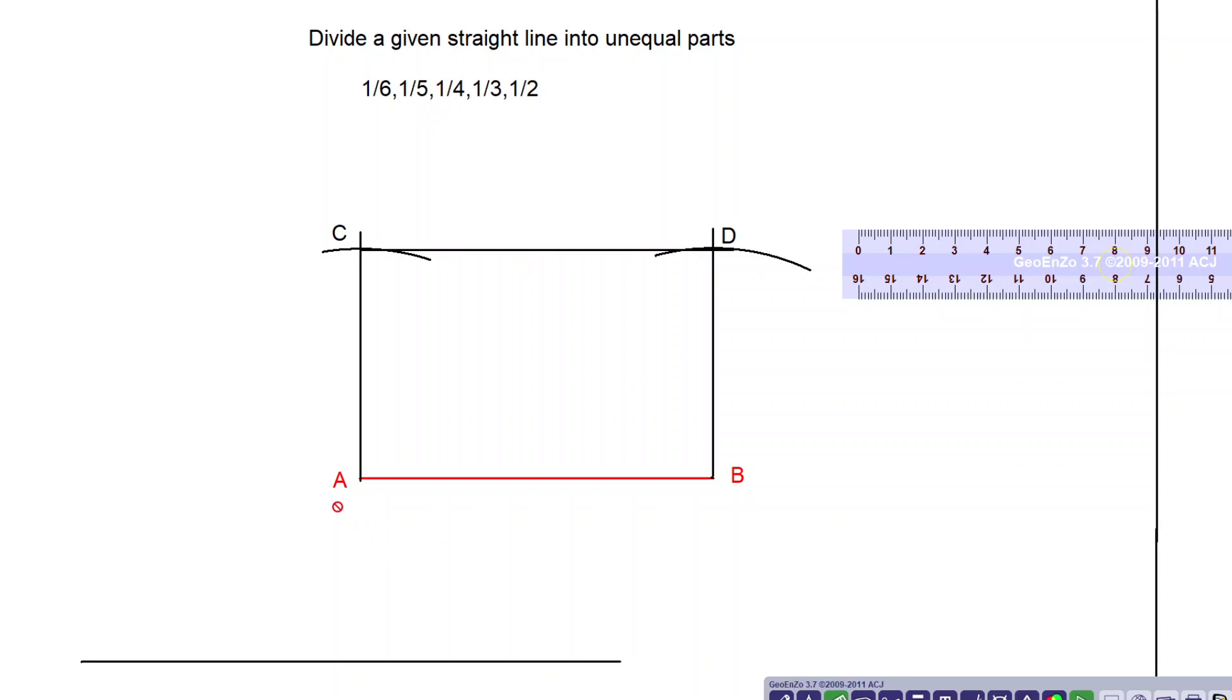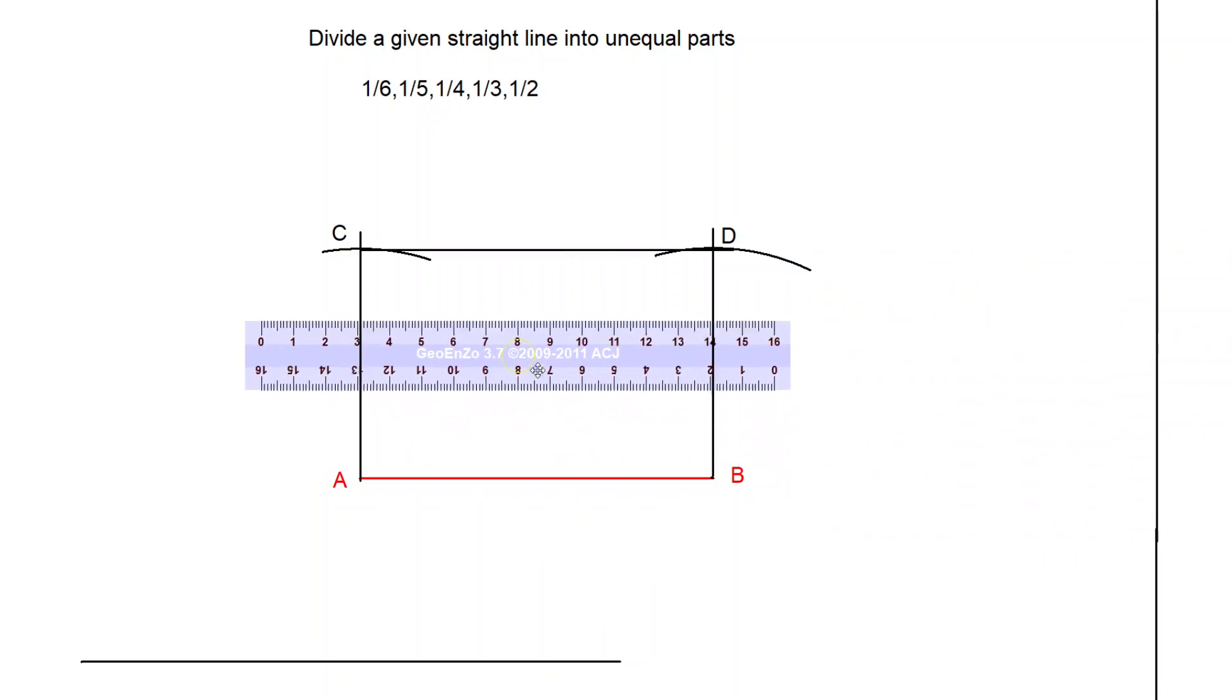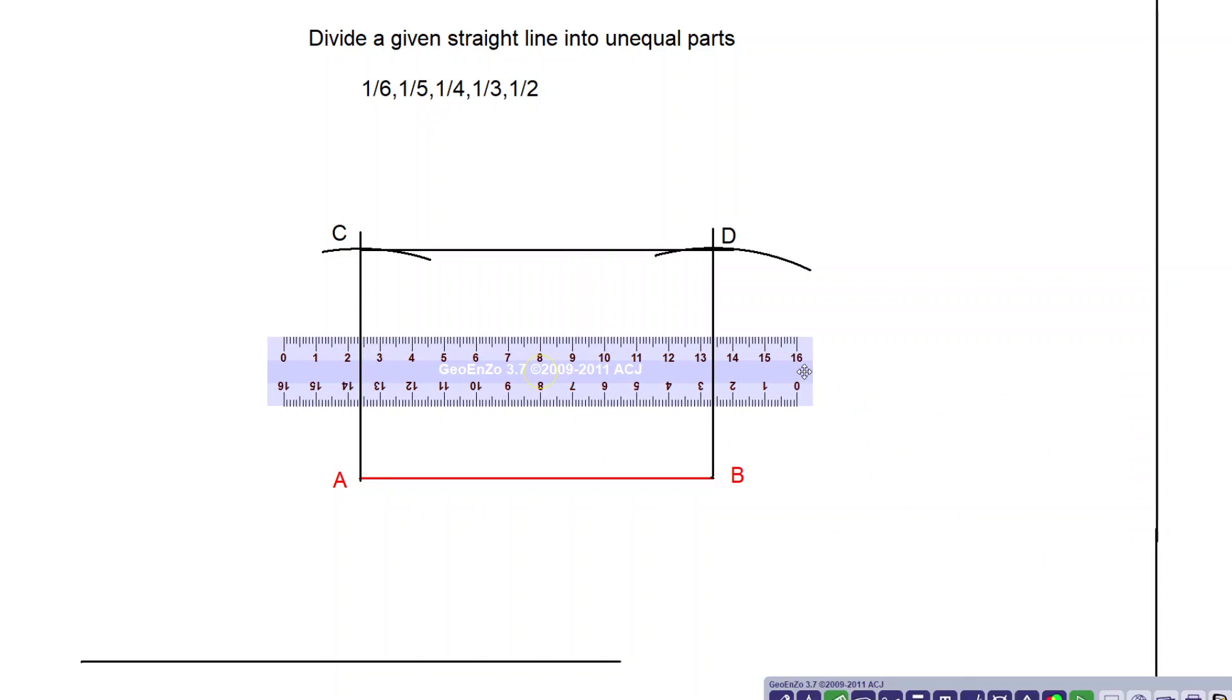Now what you can see there, it has become a rectangle ABDC or ABCD. Next job is to draw the diagonals AD and BC. I will try to draw the diagonals AD and BC.